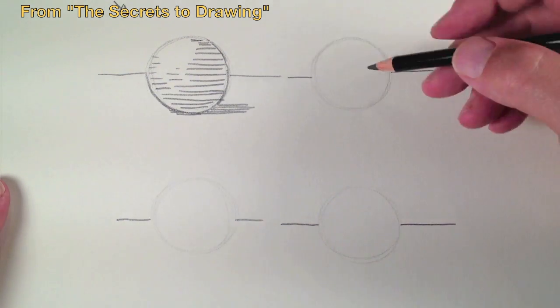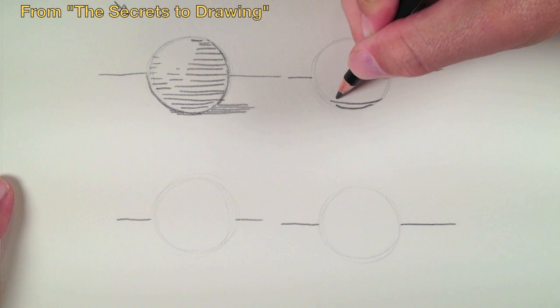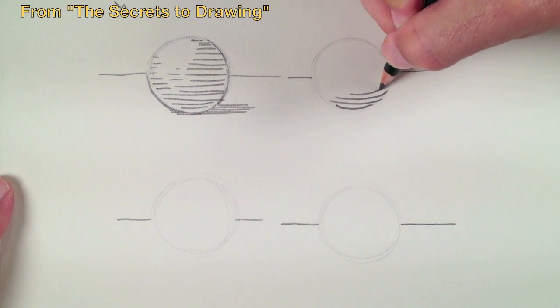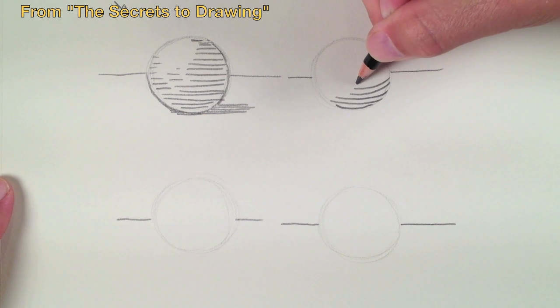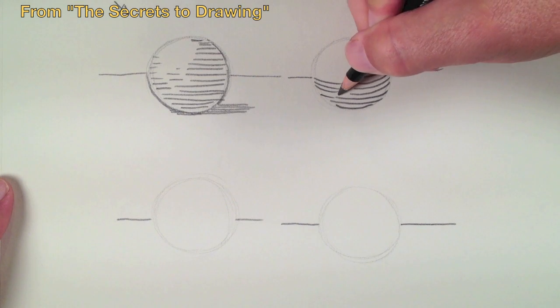Instead, a sphere is a circular object. So the cross contour lines that we create should have some spherical qualities about them. They should be a little bit rounded. They follow the cross contours of the object. A good way to think about this is if you picked up an object,